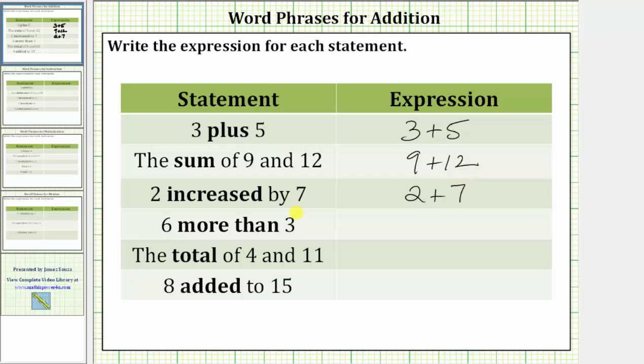We need to be careful with the next expression. We have six more than three. If we want six more than a quantity, we need to add six. The expression for six more than three is three plus six. We begin with three, and then by adding six, we have six more.